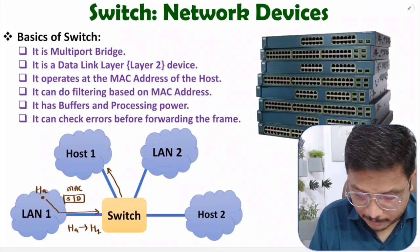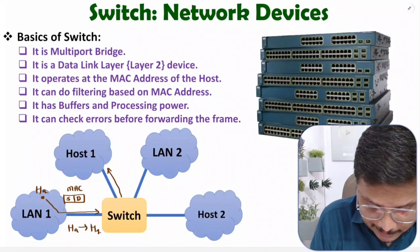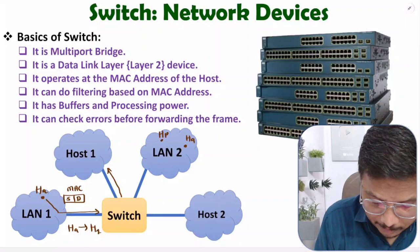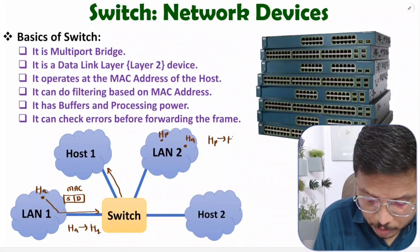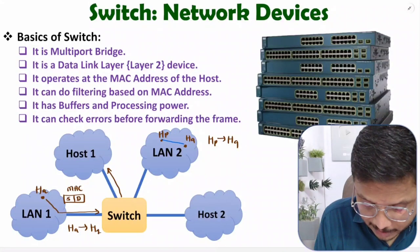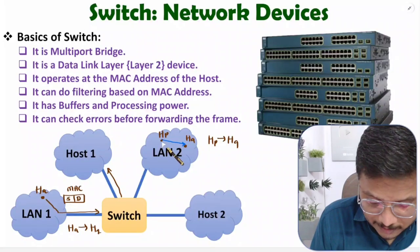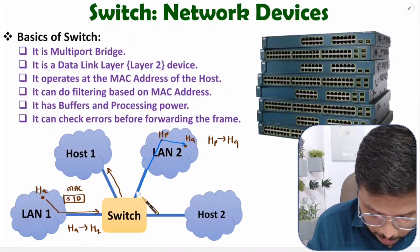Now let me show how filtering works. Inside LAN 2, let's say we have Host P and Host Q. If Host P is sending a frame to Host Q, Host P will simply transfer data towards Host Q — they are in the same LAN — but that frame will also reach the switch.